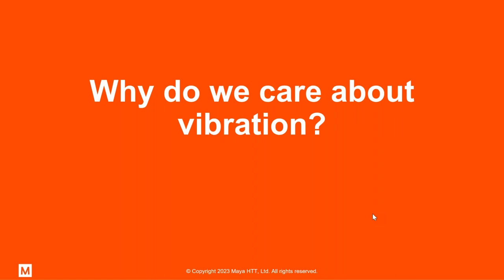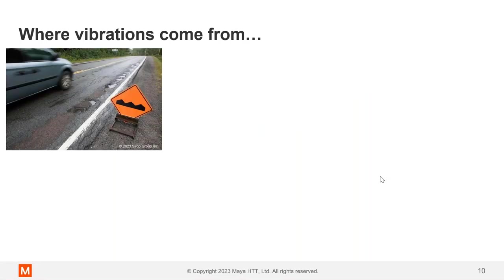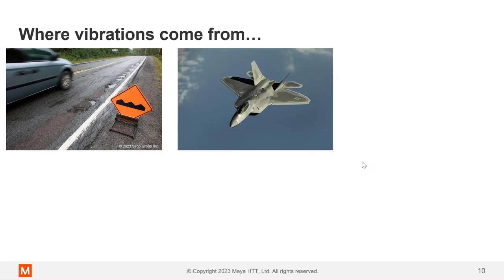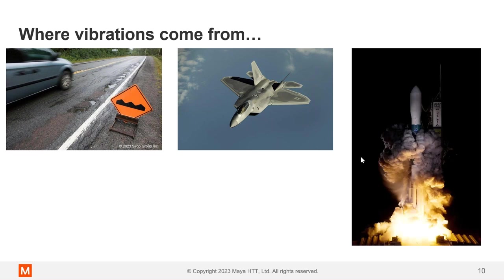So taking a bigger step back, why do we care about vibration? Let's talk first about where vibrations come from. So you can have vibrations, some of the examples of the car's tires and suspension interacting with the surface of a road causes vibration. A plane in flight, the air buffeting around it causing vibration and then on landing, takeoff, the engines on the plane.